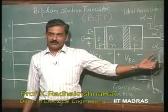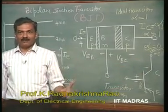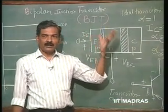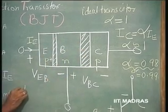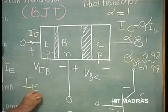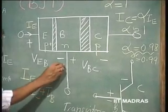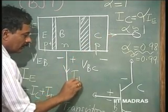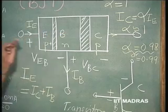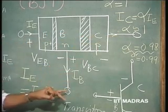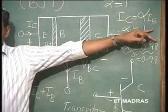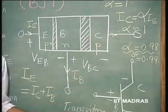Transistor action means IC equals IE and base current is zero. The actual current equation at the node is: emitter current equals collector current plus base current — this is Kirchhoff's law and has nothing to do with transistor action. Transistor action specifically means IC equals alpha times IE. In an ideal case, alpha equals 1 and IB equals zero.